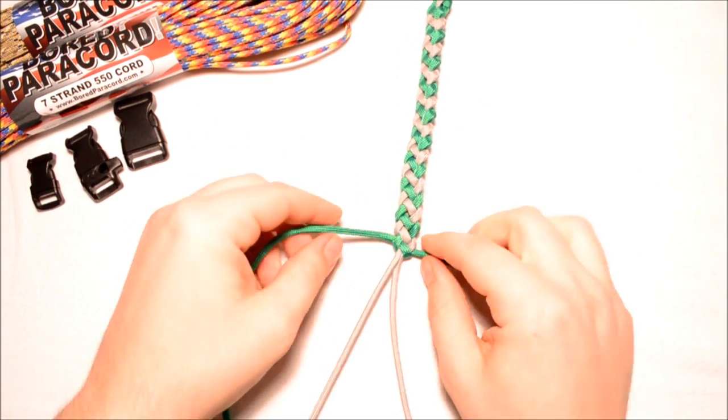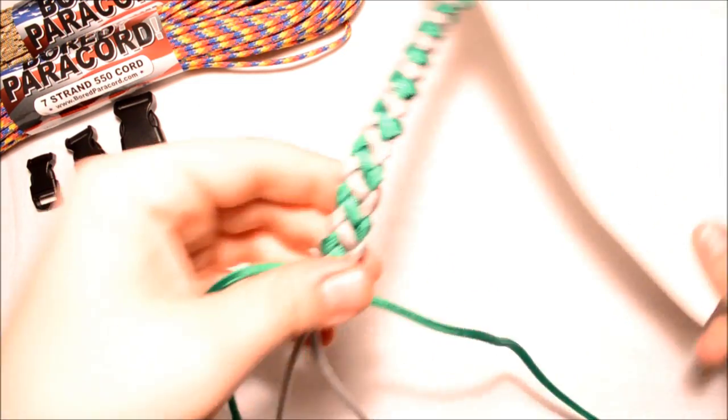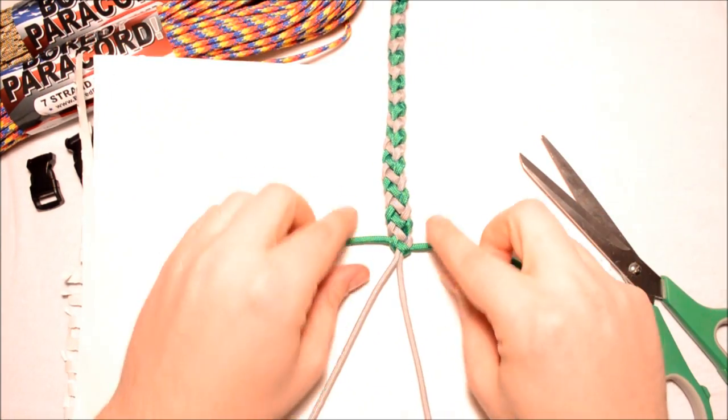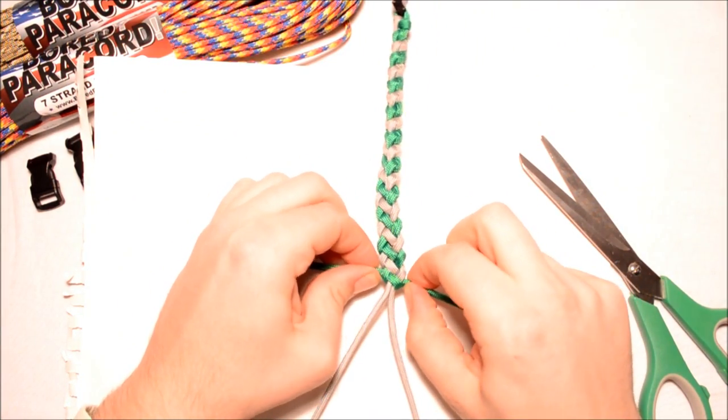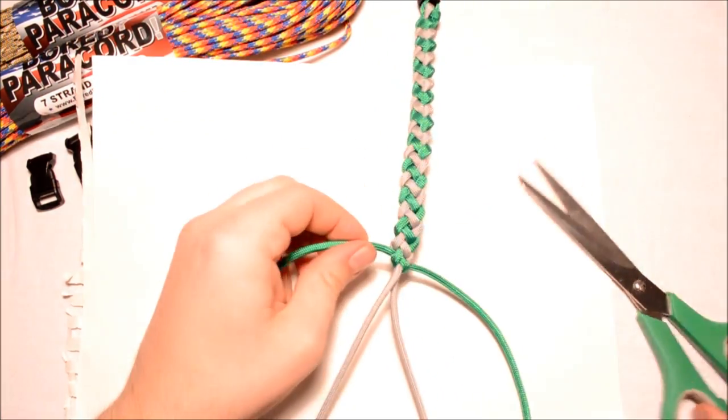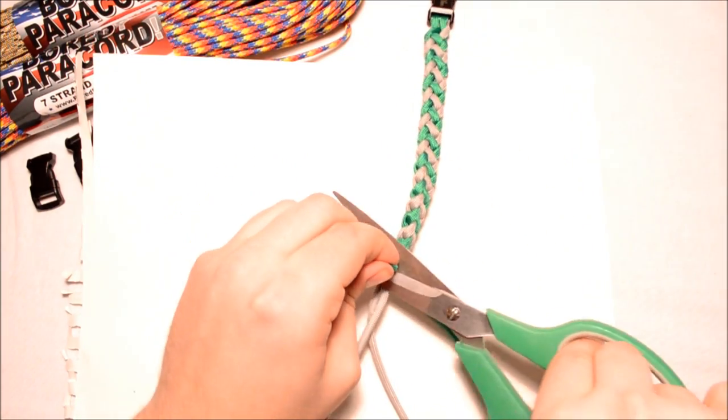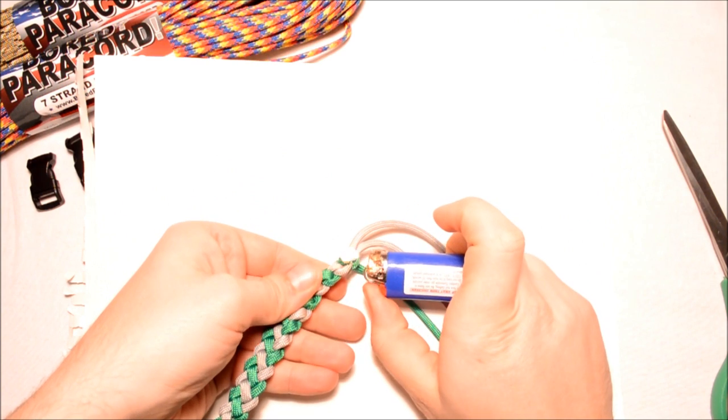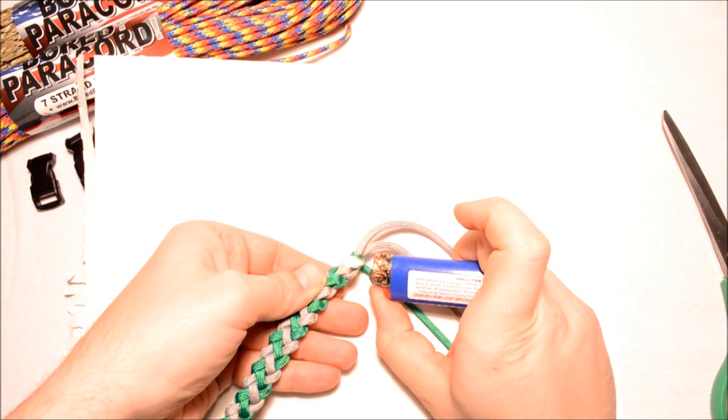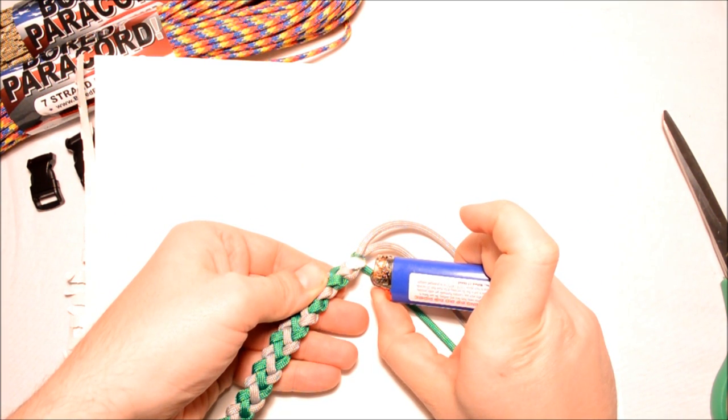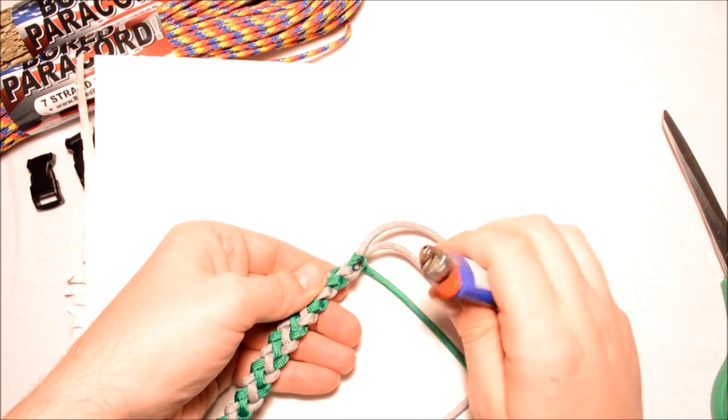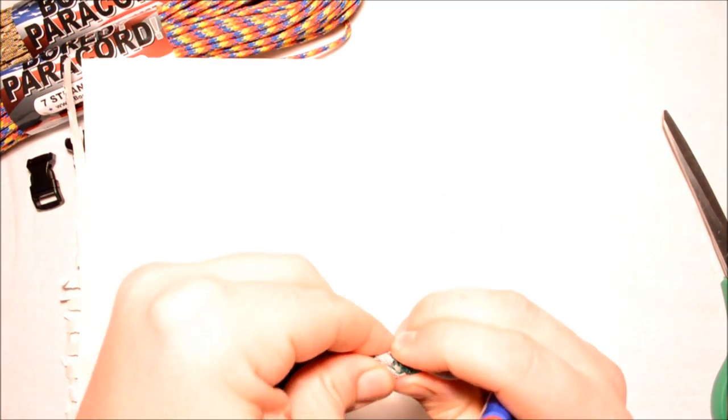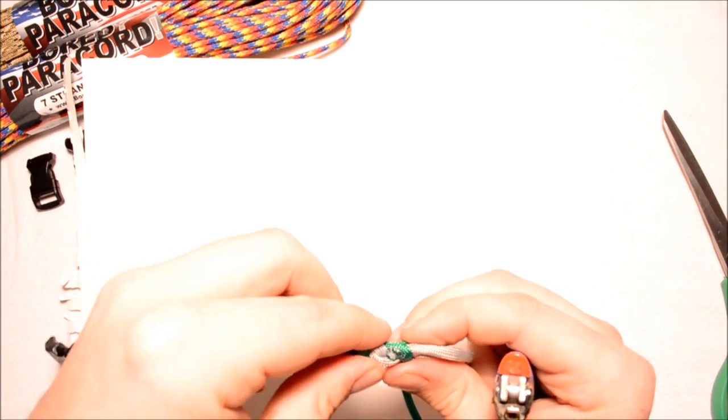Basically I need to get this buckle on here but first what I want to do is at this point I get a piece of paper under there. I want to cut the top piece, the one that I just tied. I want to cut this and then singe the ends. So we'll do this real quick. There's that one, that looks good.